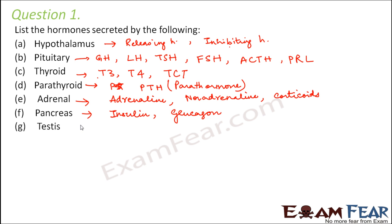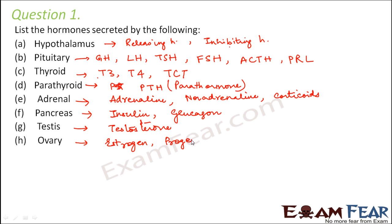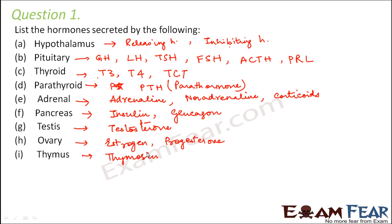The testis secretes the male androgen, that is testosterone. The ovary secretes the female hormones — estrogen and progesterone. Estrogen takes care of all the female sex organs, female behaviors, and female secondary sexual characters, while progesterone takes care of things related to pregnancy. The thymus gland releases the hormone thymocin, which builds up the immune system.